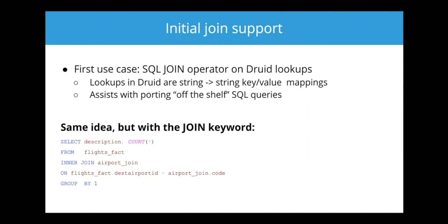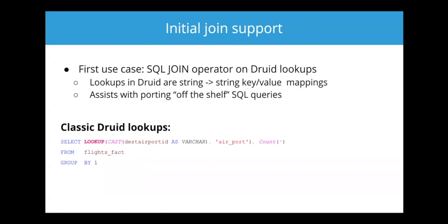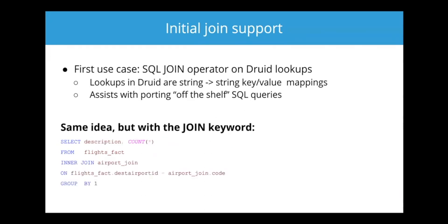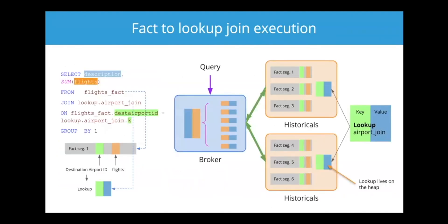So even in this particular use case — SQL join operator on Druid lookups — even though the classic Druid lookups are defined and transferred out to Druid servers the same way they've always been, the way they're processed has radically changed. When you write the lookup function, it's applied as a plain old function. When you write the JOIN keyword, it's not just syntactic sugar — it's actually running through a completely new query engine.